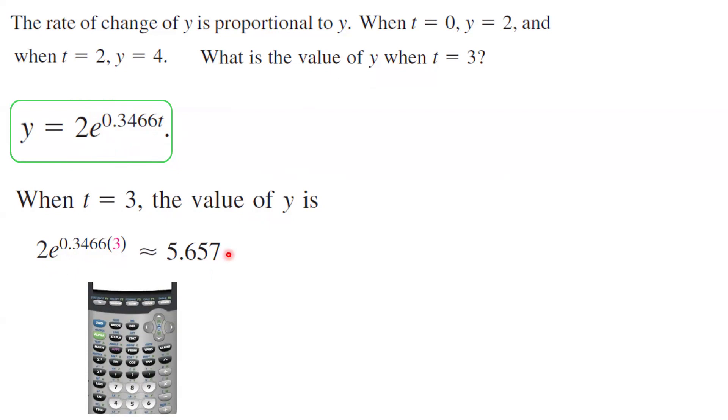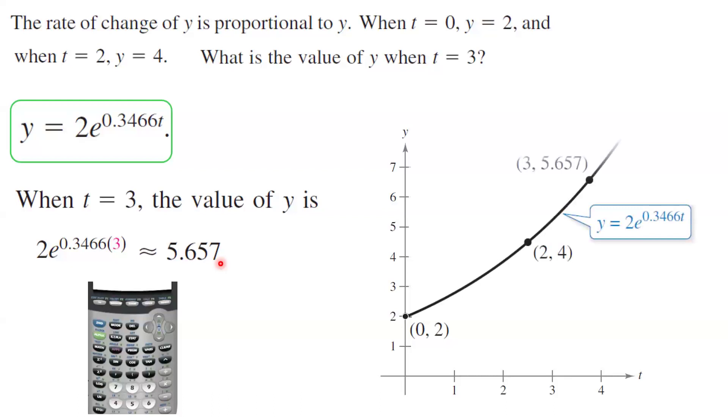So what do we see here? What is the pattern? When t equals 0, y is 2. When t equals 2, when t increases, y increases to 4. And when t equals 3, your y is 5.657. We can visualize this as well. We have an exponential function which is the solution of this differential equation.